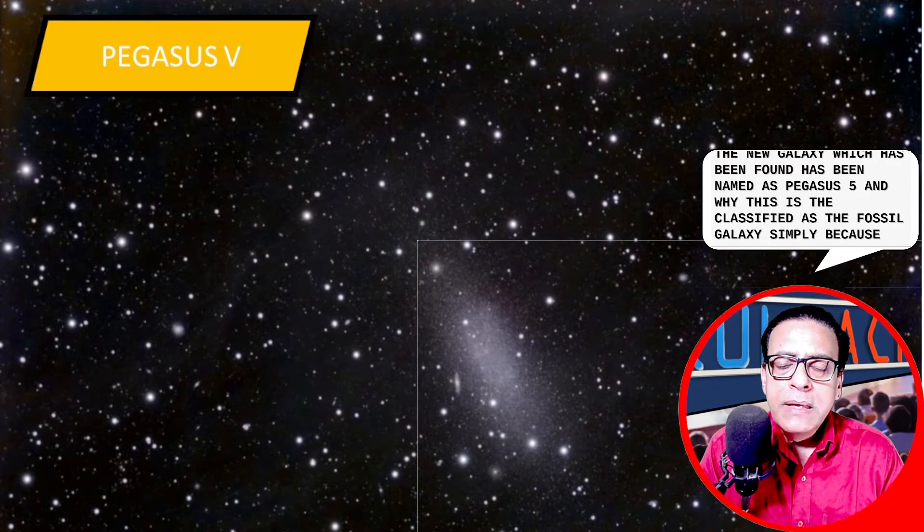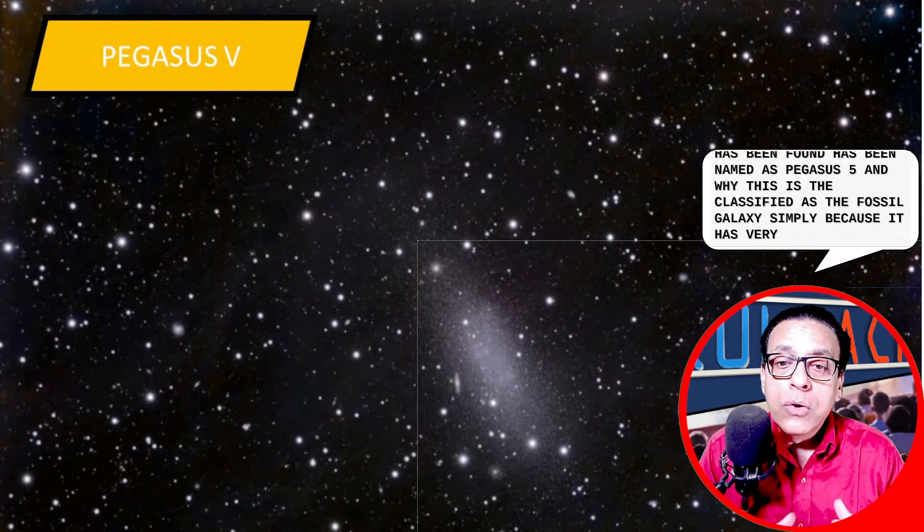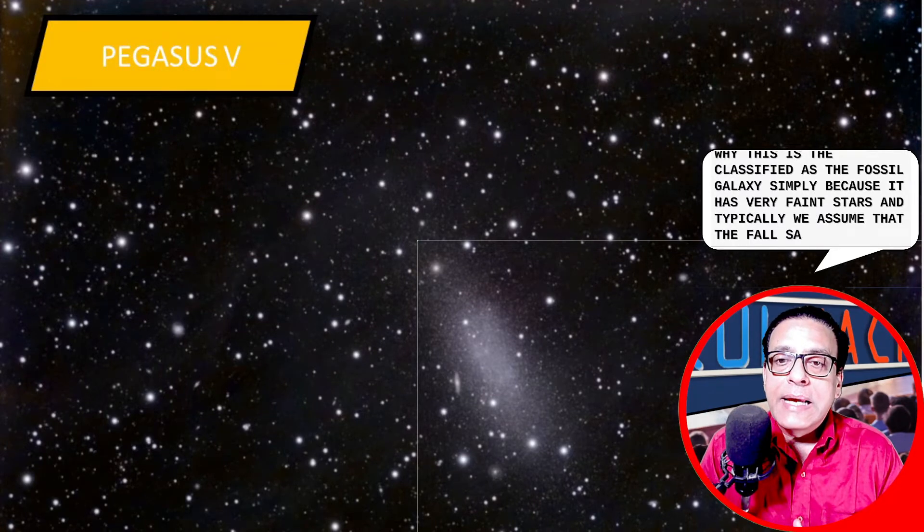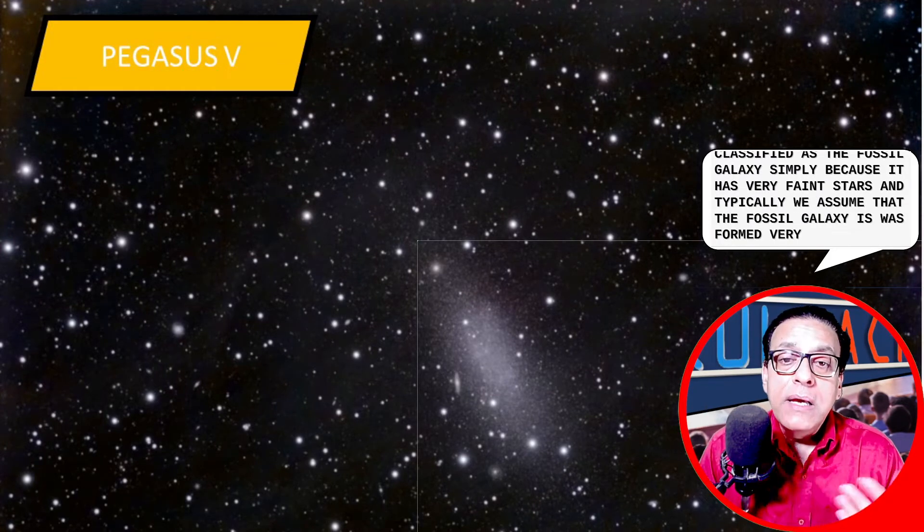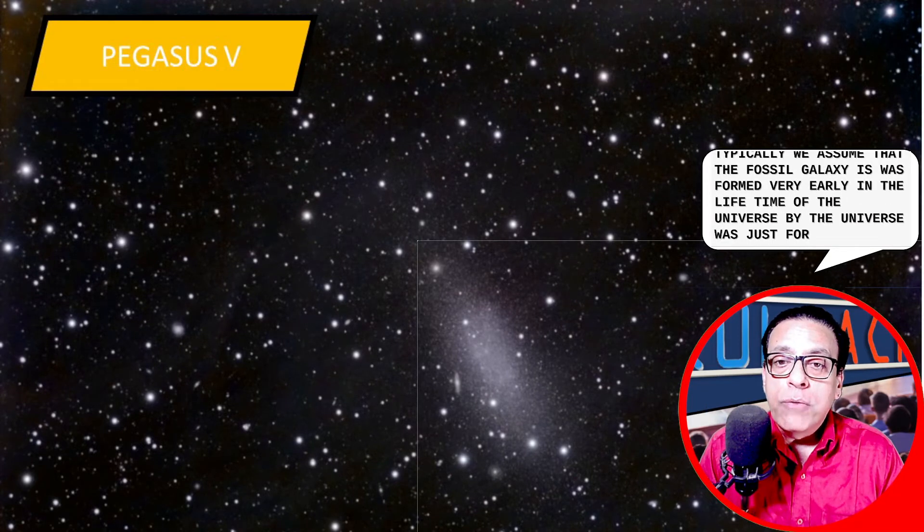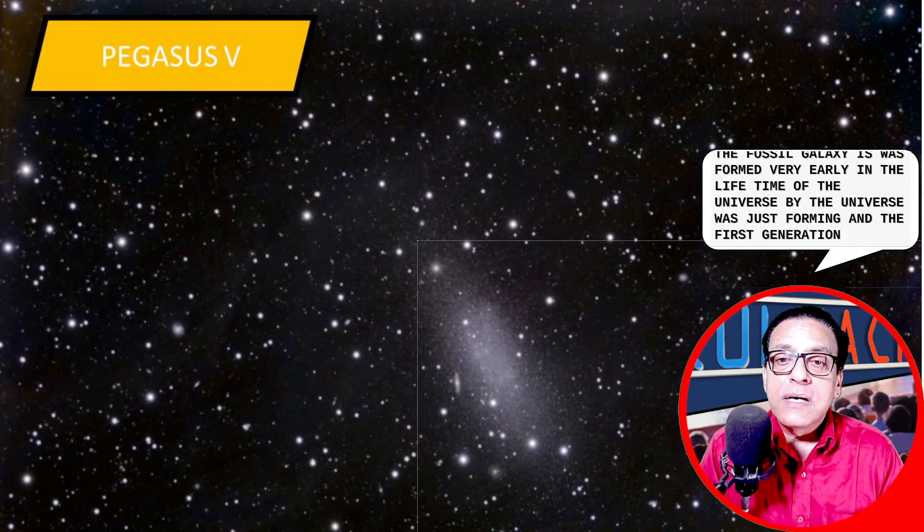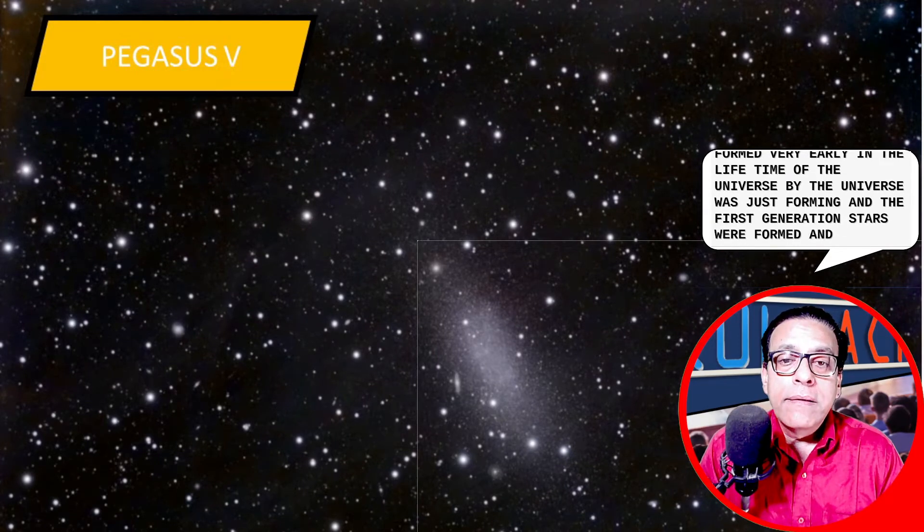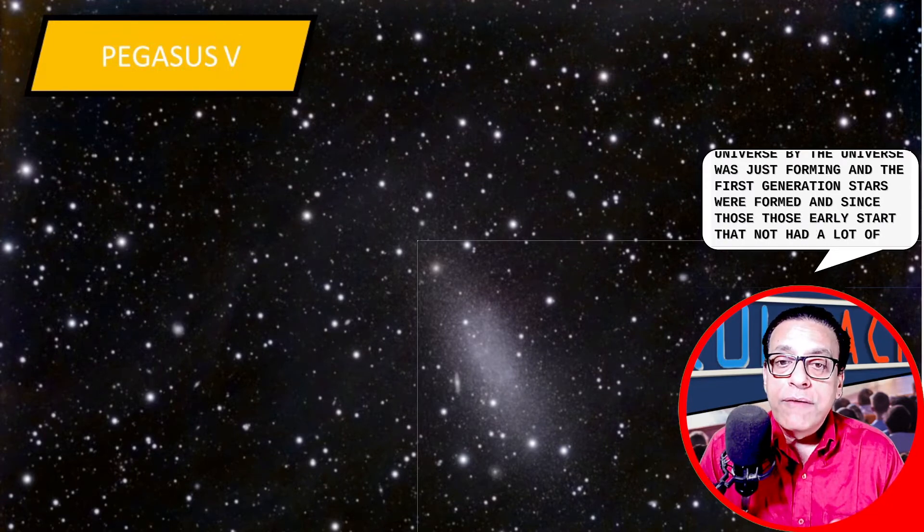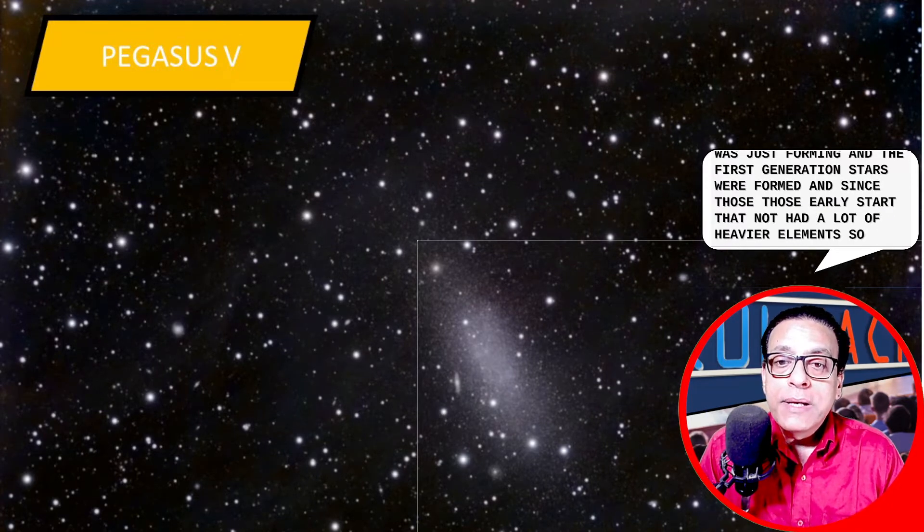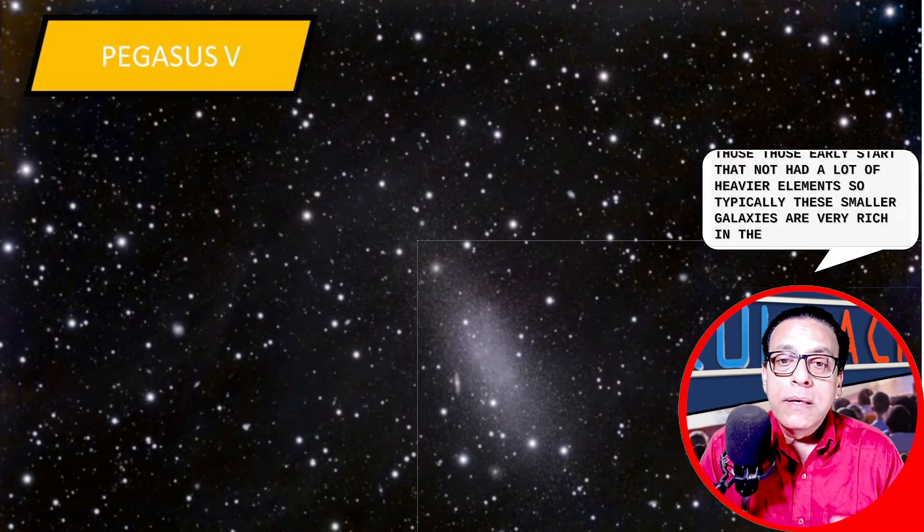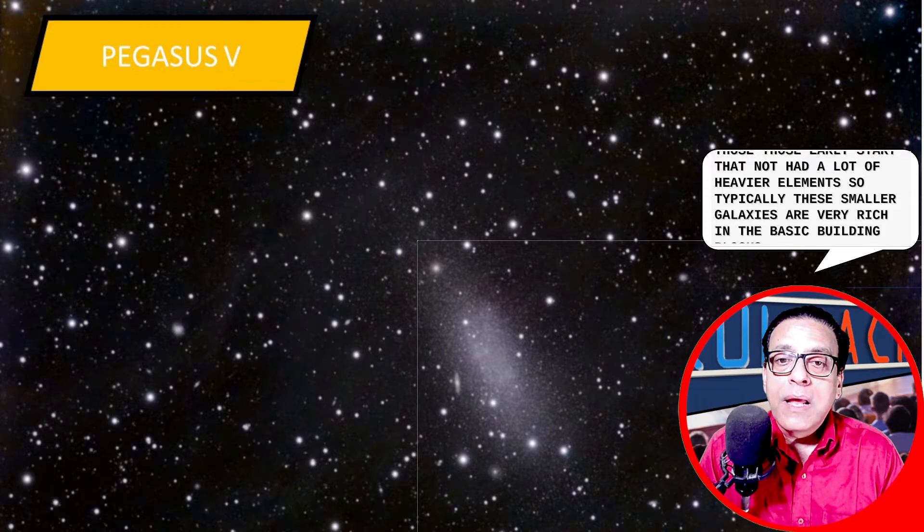And why this is classified as a fossil galaxy? Simply because it has very faint stars. And typically, we assume that the fossil galaxies were formed very early in the lifetime of the universe when the universe was just forming and the first generation stars were formed. And since those early stars did not have a lot of heavier elements, typically these smaller galaxies are very rich in the basic building blocks like hydrogen and helium.